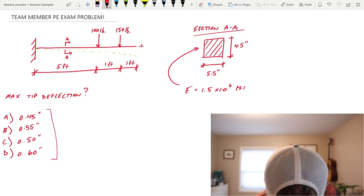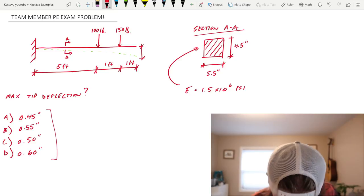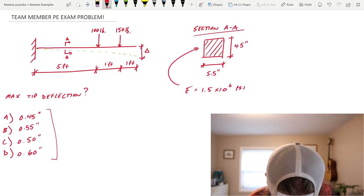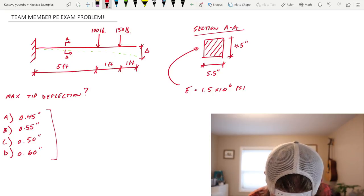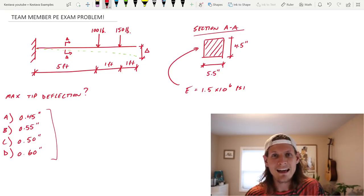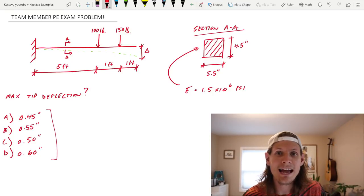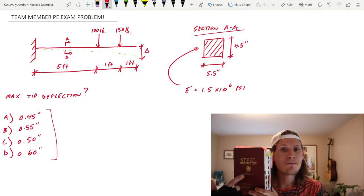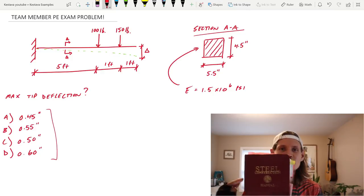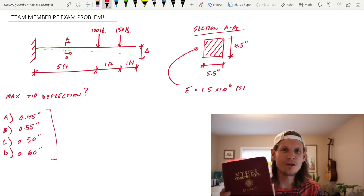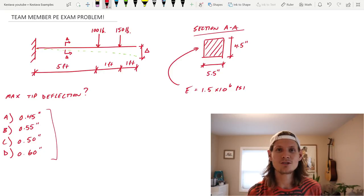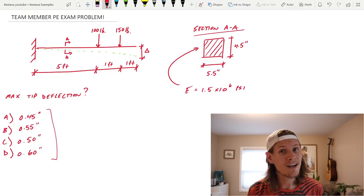So if we go green here under this loading, that cantilever member is going to see some type of deflection like this. And the kicker is he wants to know what is total deflection at the tip. So at the free end of this member, where do you think I'm going to go? We got those shear and moment charts and so many different scenarios you should be utilizing. And we are going to flip over to page 3-220.